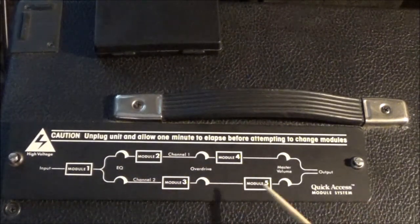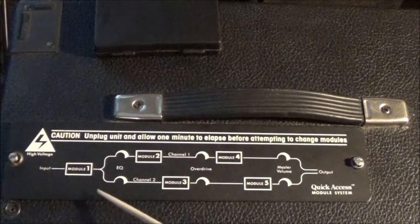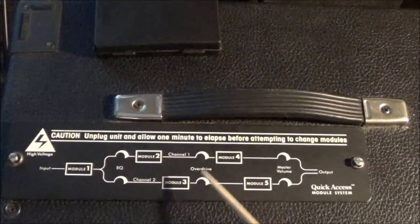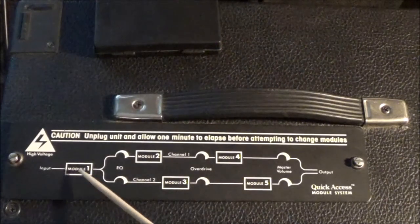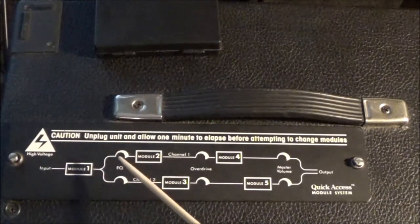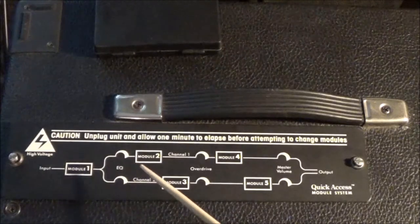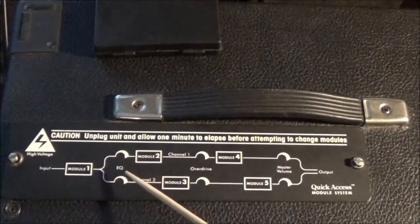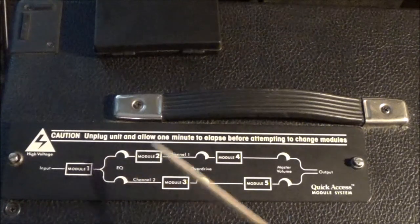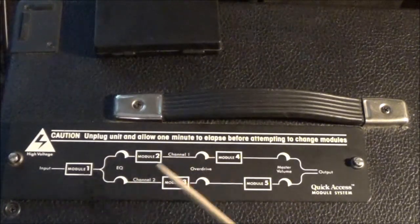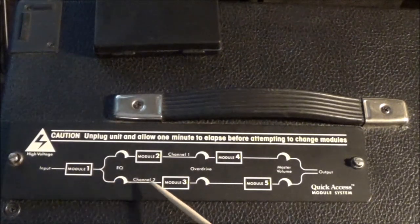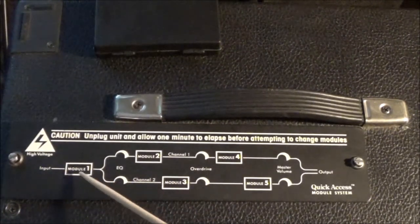When you switch to channel 2, it's module 1, module 3, module 5. You'll notice module 1 is common to both channels. Now this is not a true two-channel amp like a Fender Twin Reverb that actually has two completely independent circuits. This is an amp that uses a channel switching relay.